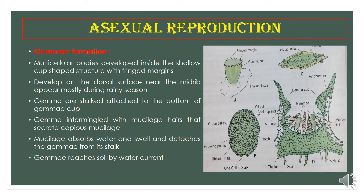The third method is Gemma formation. The dorsal or upper surface of Marchantia bears a specialized cup-like structure called the Gemma receptacle. Inside the Gemma receptacle there are Gemmae, which are borne very close to the mid-rib region. The development of Gemmae is acropetal, which means the Gemma closest to the apex is the youngest, and the Gemma present in the posterior region is the oldest.